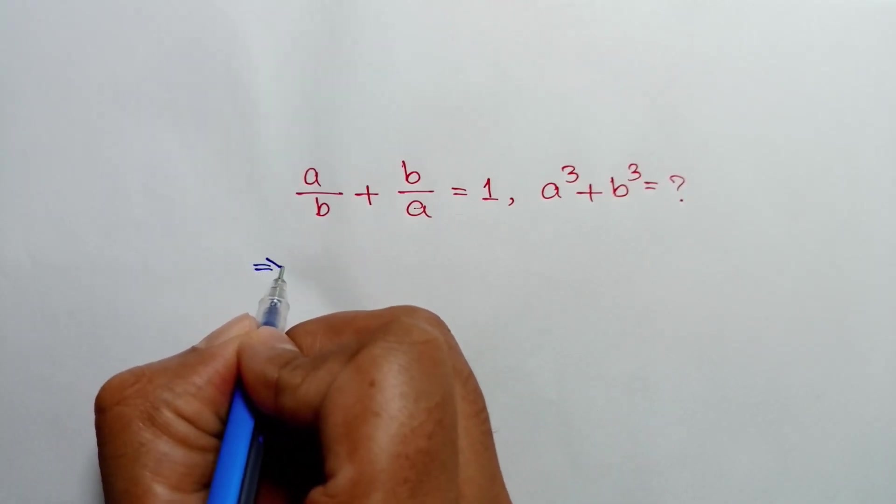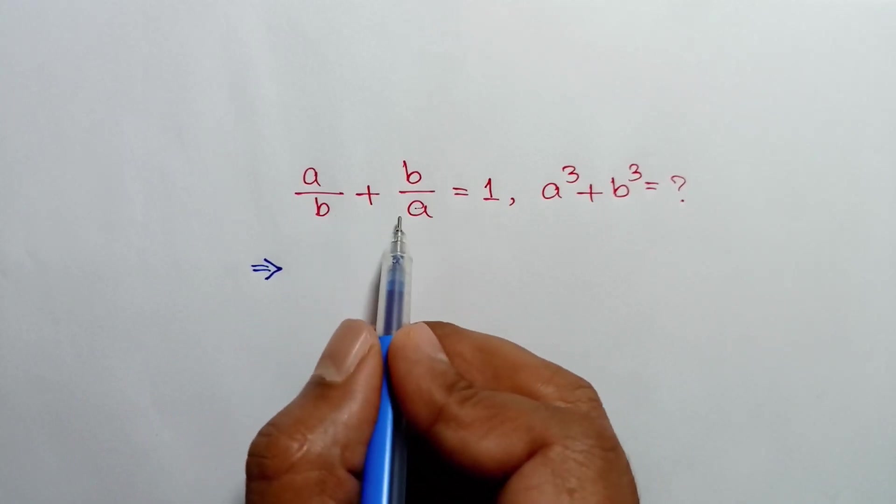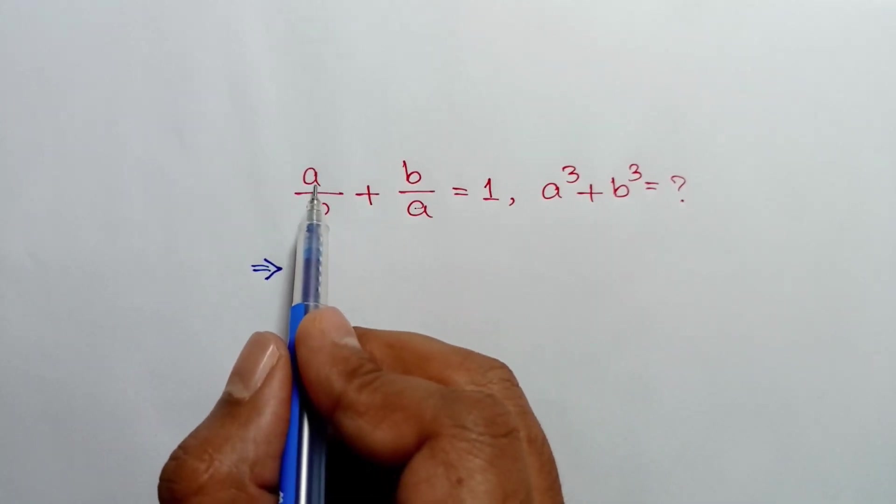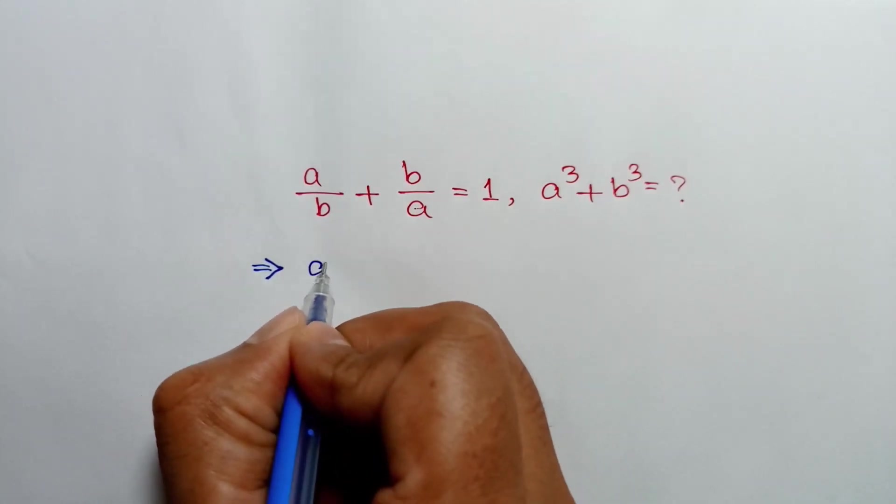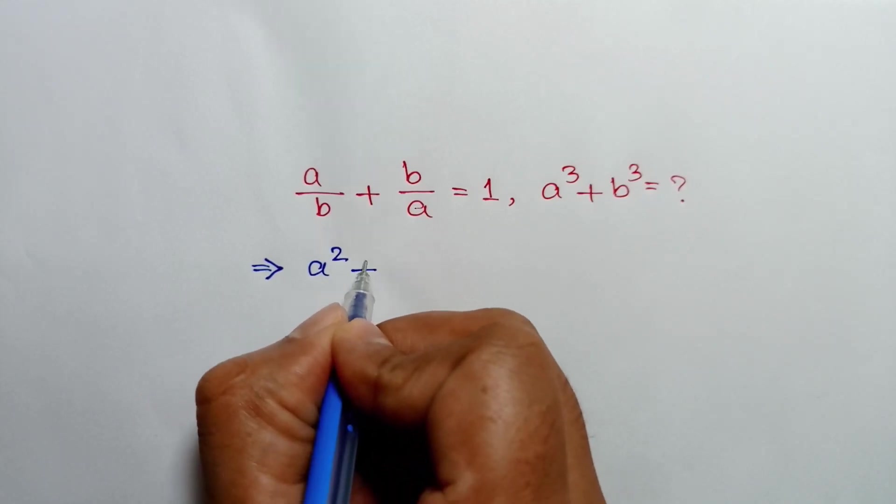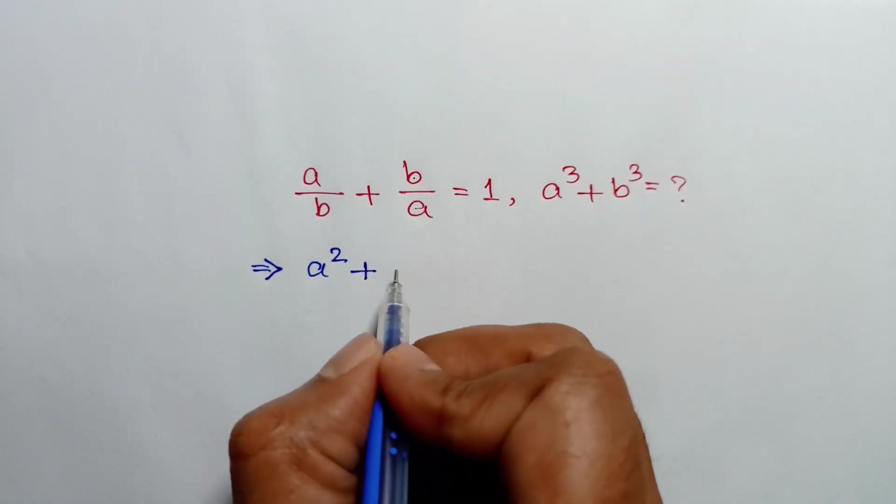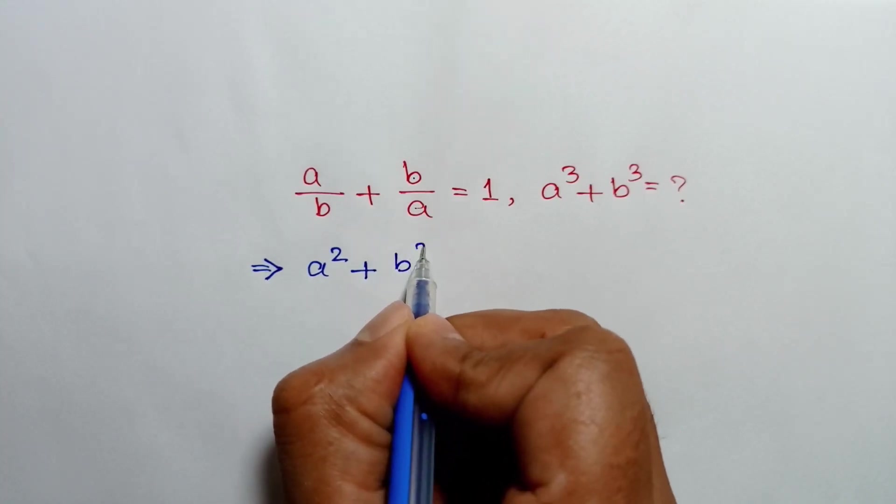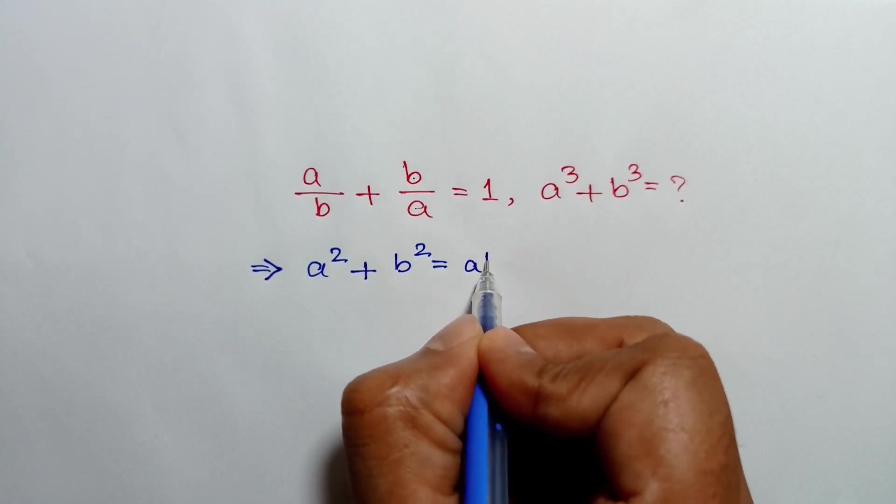Multiplying both sides by ab, we can write a over b times ab will be a square, plus b over a times ab is b square, is equal to one times ab is ab.